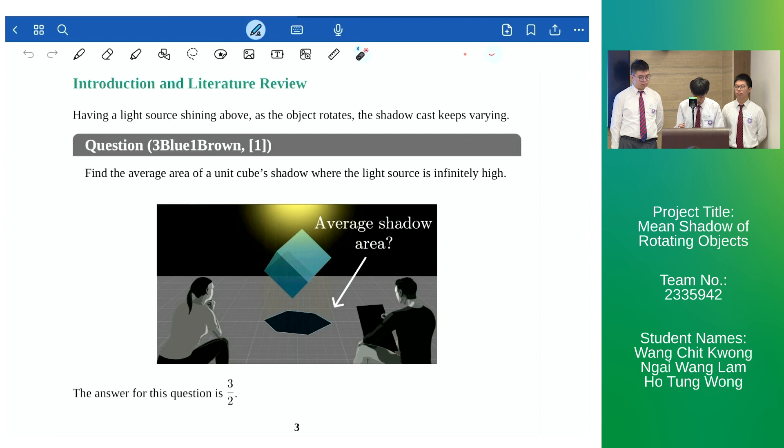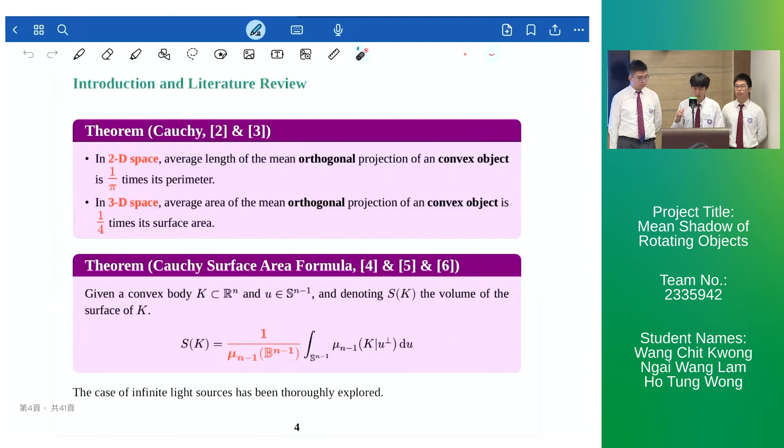And the answer for this question is 3 over 2, which is derived from Cauchy's finding dated in the 19th century. That is, in R3 the average area of the shadow of a convex object is 1 over 4 times its surface area.